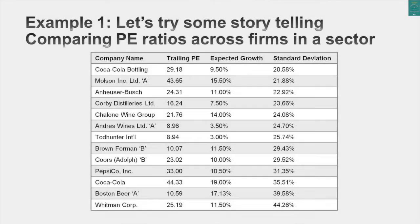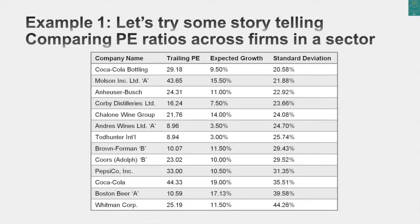Now that we've talked about the variables that drive P/E ratio, let's try it out. I'm going to use P/E ratio in a couple of sectors to find cheap companies. The first approach is what most equity research analysts do — some storytelling. The sector I'm looking at is the beverage sector, with about 30 companies listed with their price-earnings ratios.